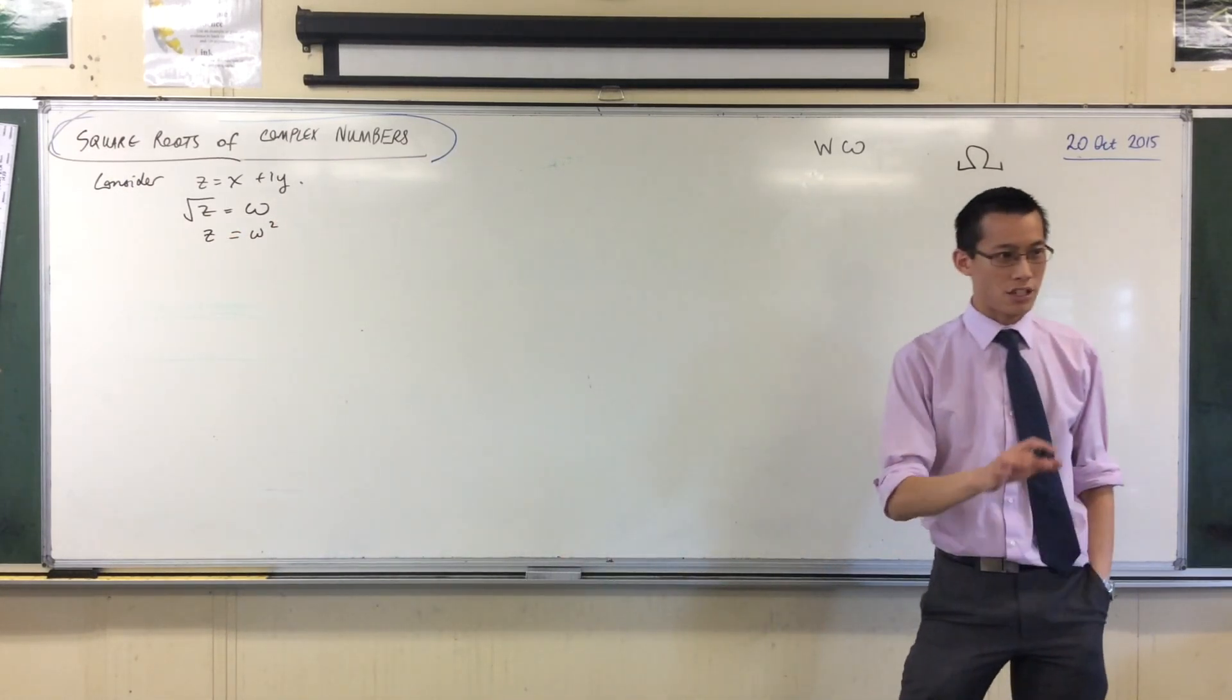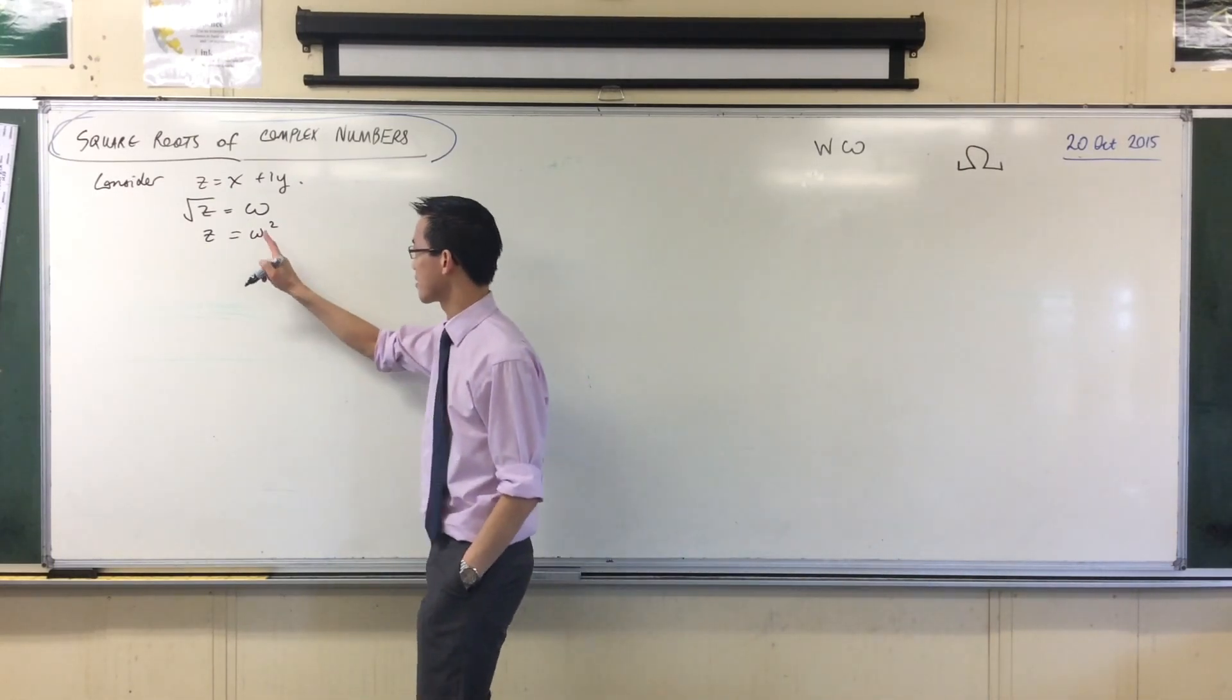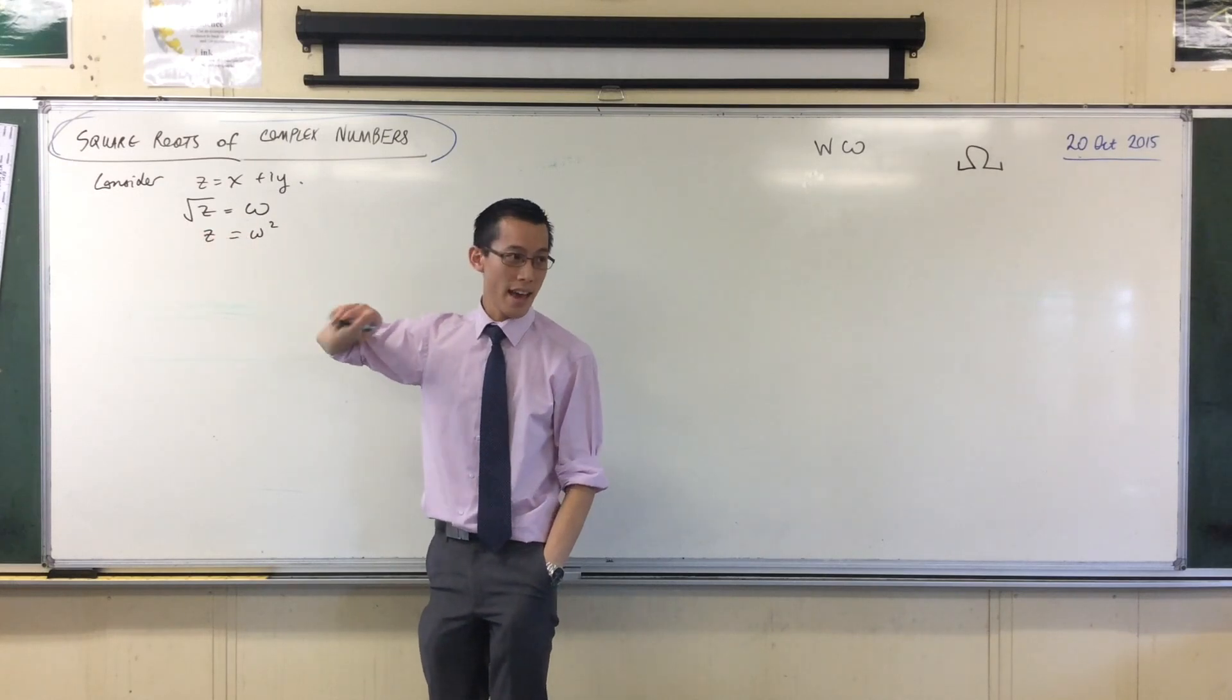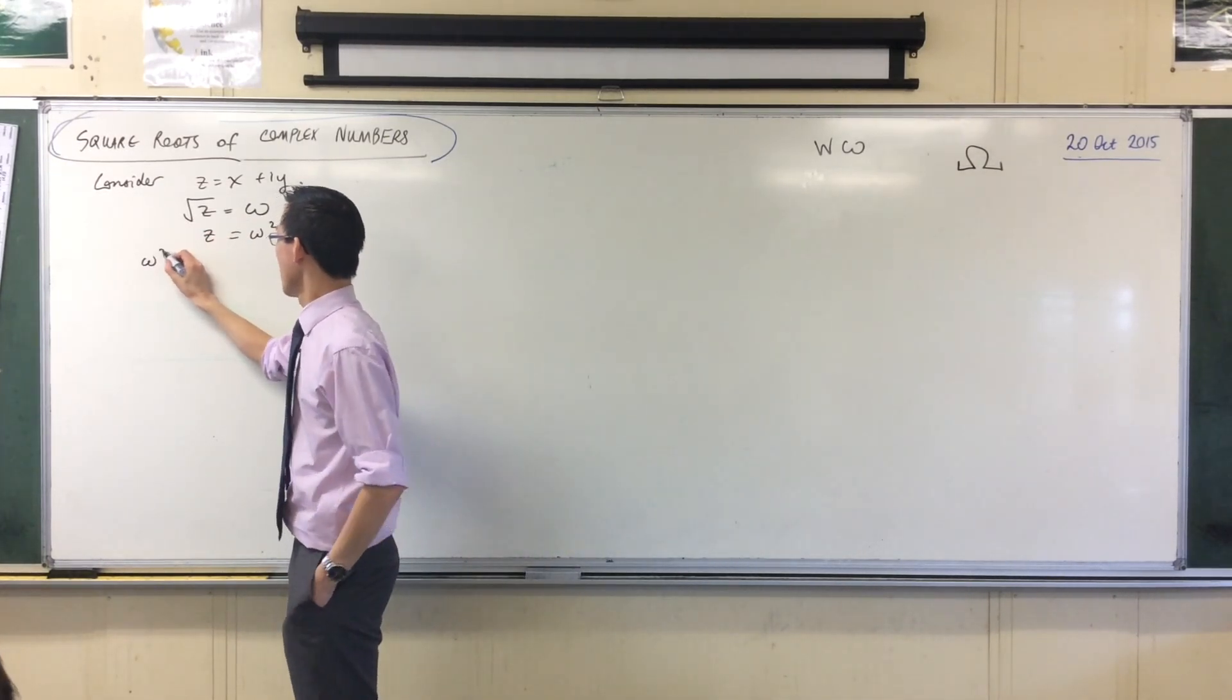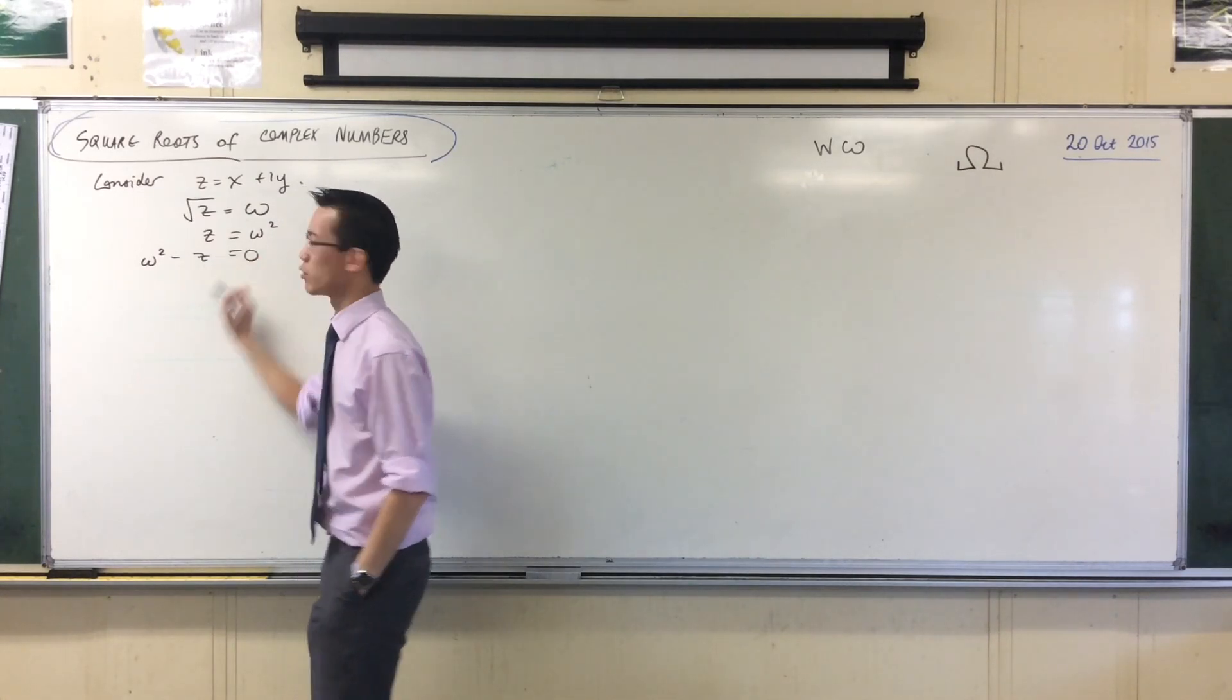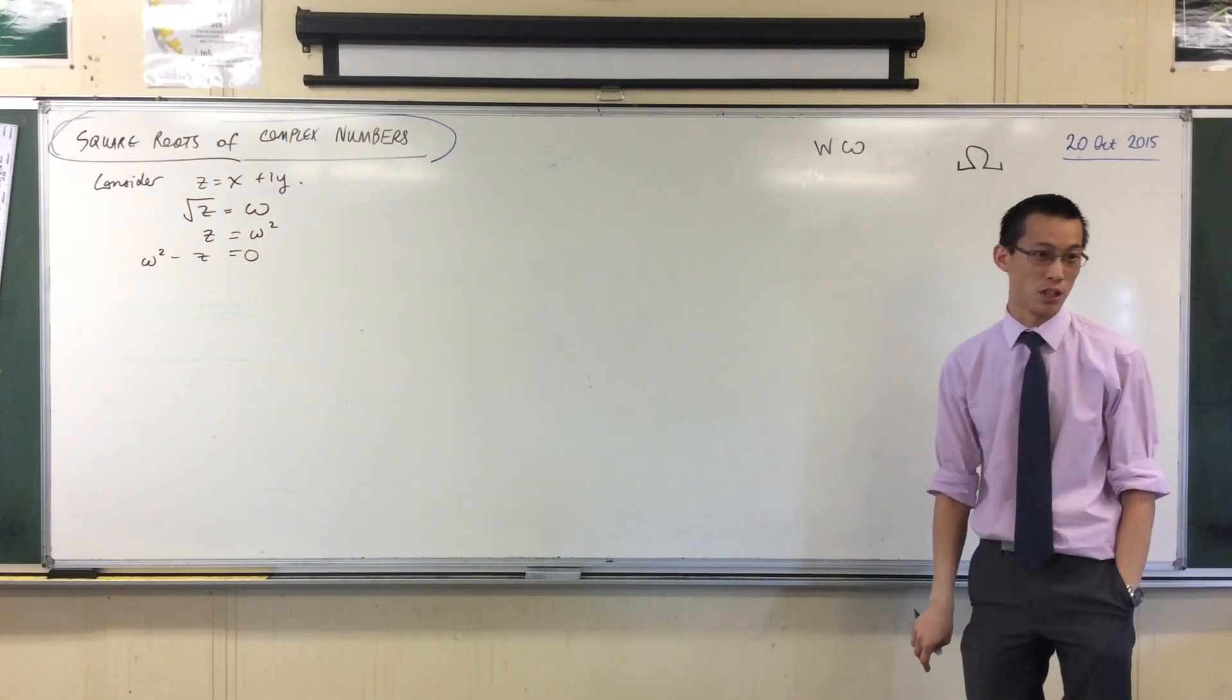Now I'm just going to adjust this ever so slightly. I'm going to write this omega squared. I'm going to put him on the left-hand side, and make this all on one side. So I'm going to write this, omega squared take away z is equal to zero. Can you see what I did was I subtracted z from both sides, and then I put everything on the left.